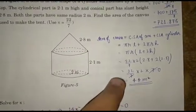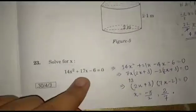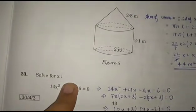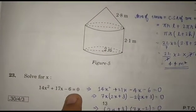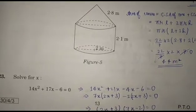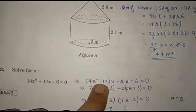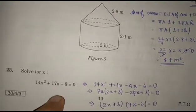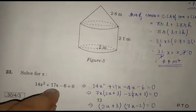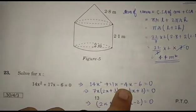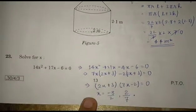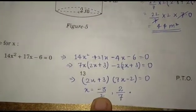Question 23: Solve for x: 14x² + 17x - 6 = 0. When we solve using the factorization method, it will be 21x - 4x, so we factorize and get the values of x as -3/2 and 2/7.